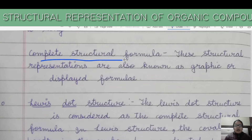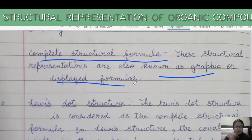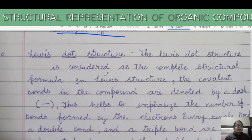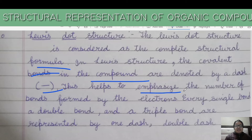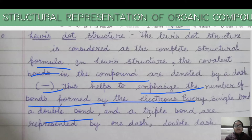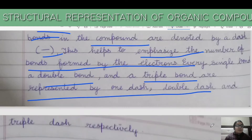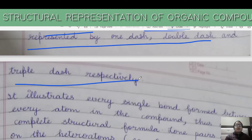These structural representations are also known as graphic or displayed formulas. The Lewis dot structure is considered as the complete structural formula. In Lewis structure, the covalent bonds between carbon atoms in a compound are denoted by a dash. Every single bond, double bond, and triple bond are represented by one dash, double dash, and triple dash respectively.